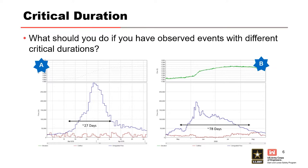Look at the example to identify which critical duration would most likely correspond to the driving mechanism of extreme floods. The 27-day duration corresponds to the rainfall-only events for this particular large basin. The rain-on-snow events occur earlier in the year in early spring and have a shorter critical duration, while the longer rainfall events take months for the water to travel down to the actual dam because the basin is so large.